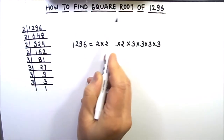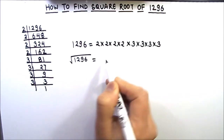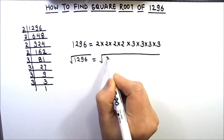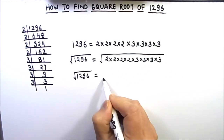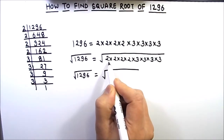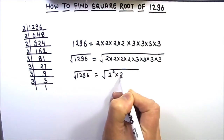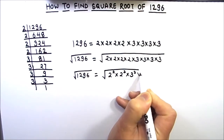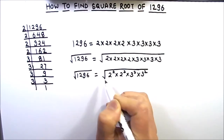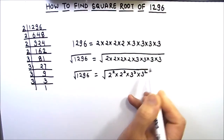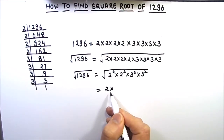Now as we are going to find the square root, we are going to take the square root on both sides. So this is the square root of 1296. We can write these numbers as the product of squares, so this will be 2² times 2² times 3² times 3². As all these numbers are squares under the square root sign, they can come out of the square root sign, because the square root of a square number is the number itself.